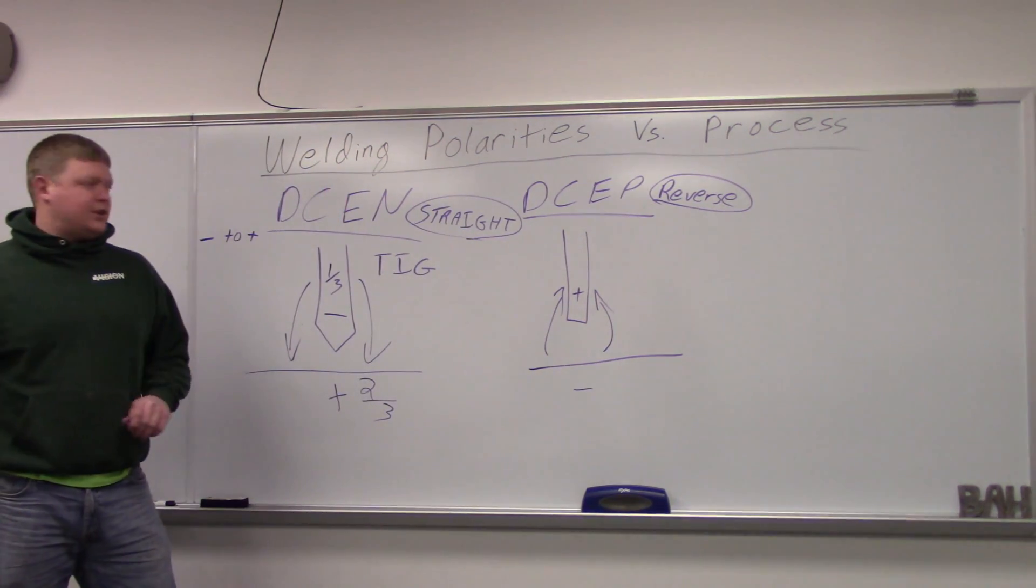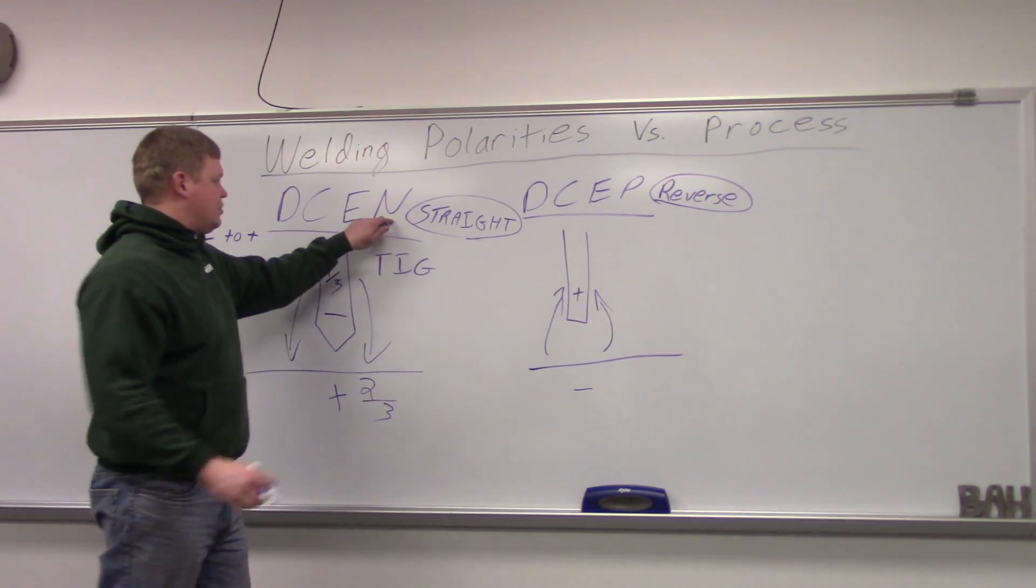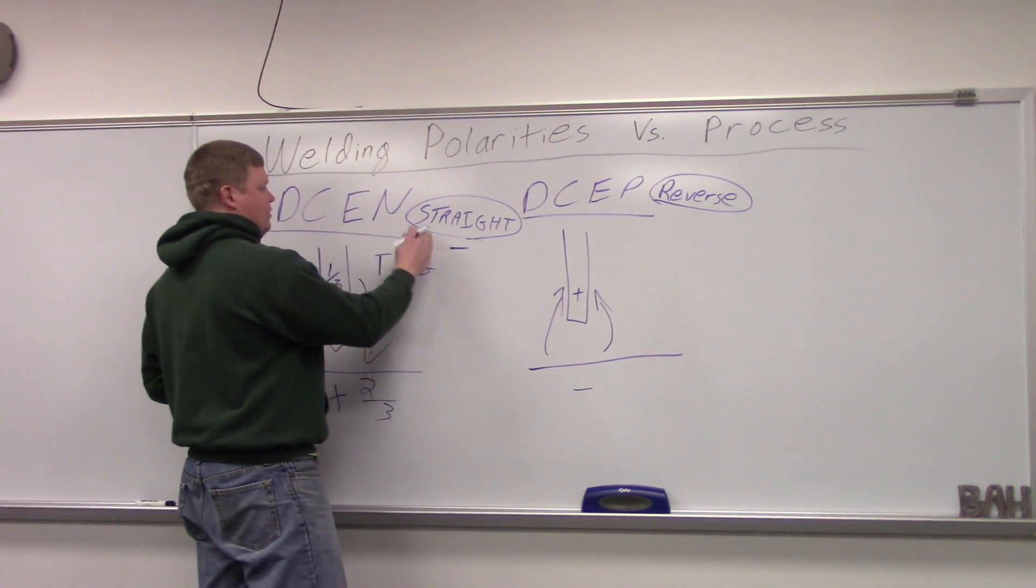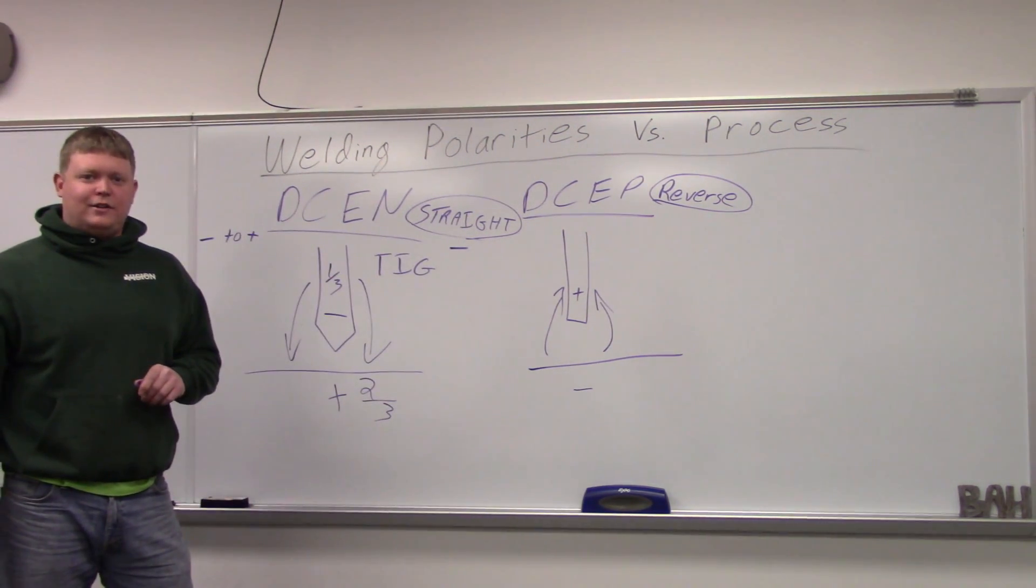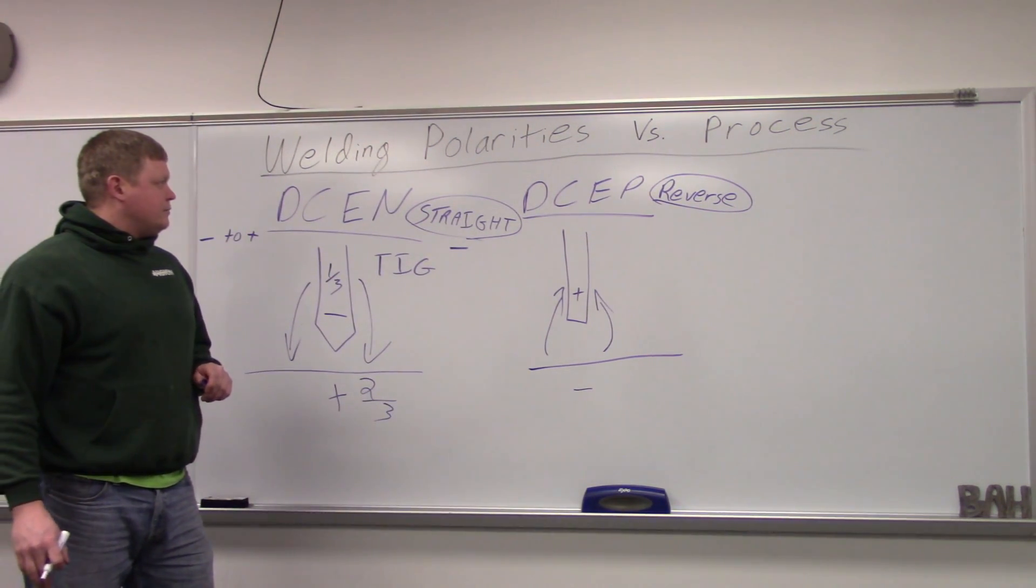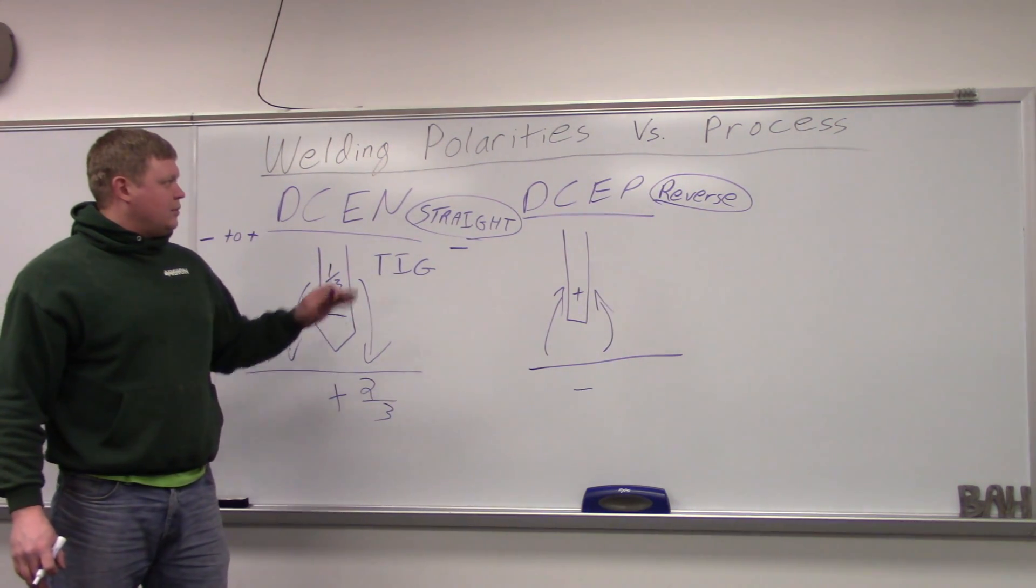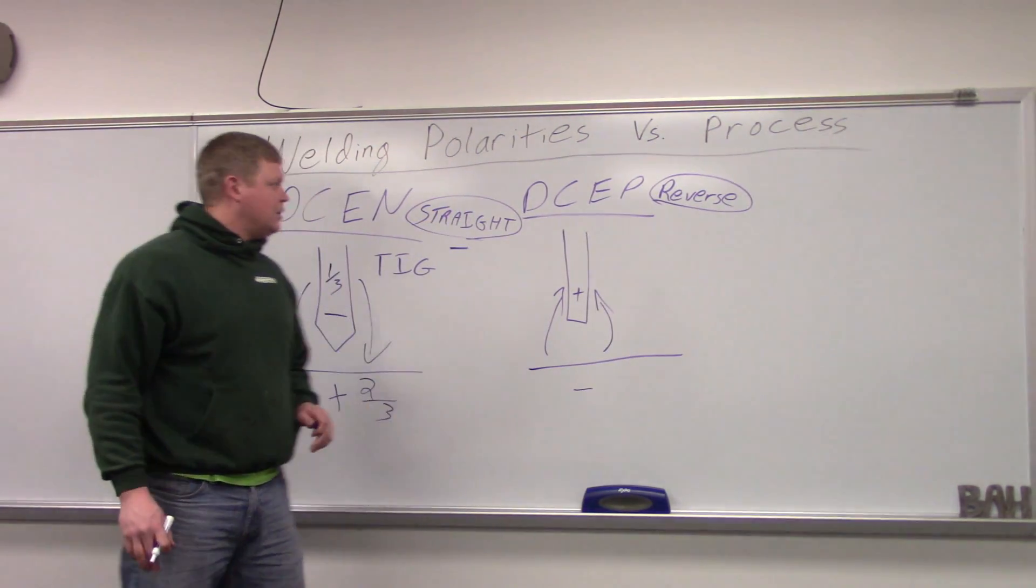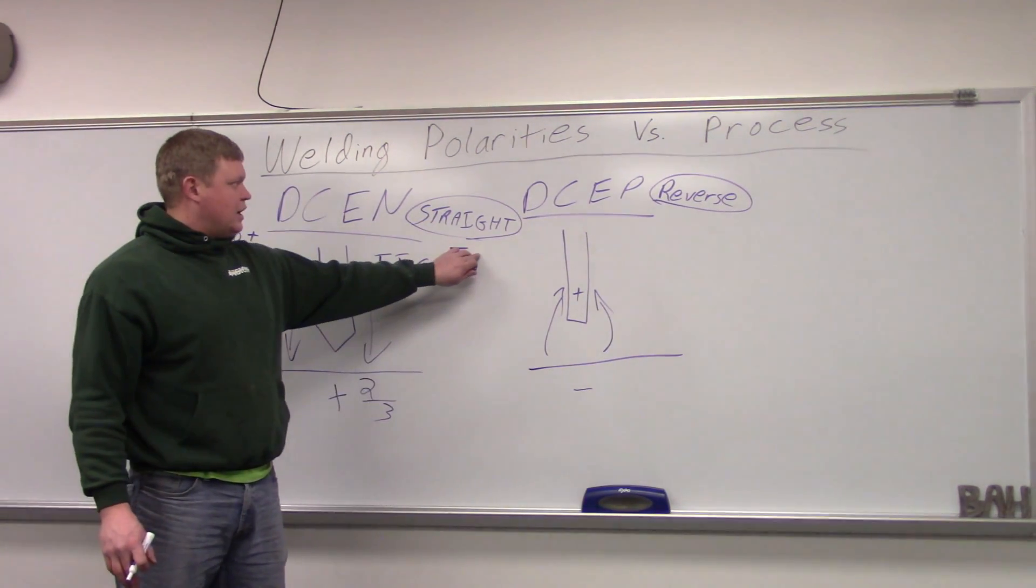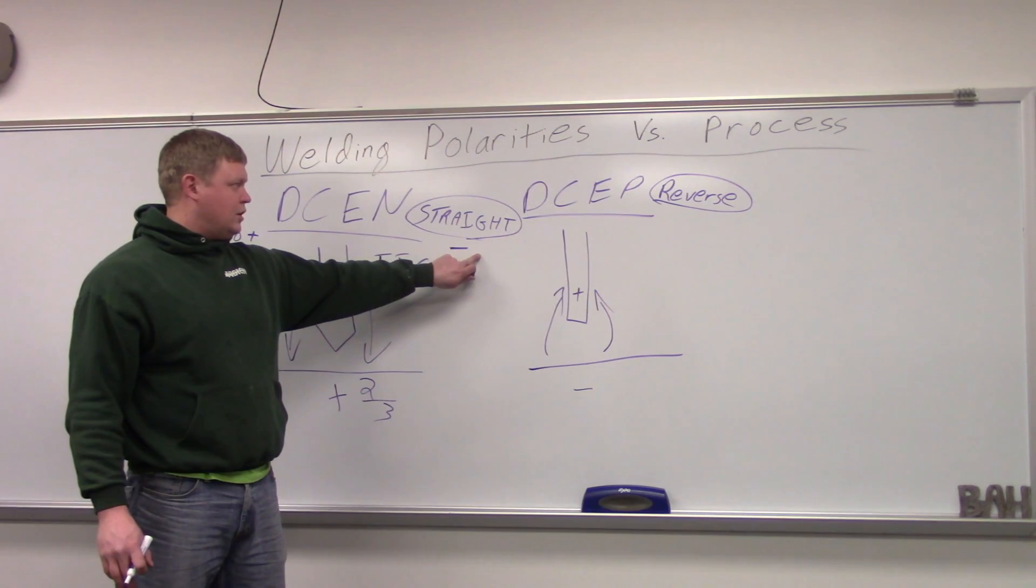And this is called straight polarity. The way I remember this is a negative sign is just a straight line, right? So direct current electrode negative, straight polarity. Direct current electrode positive, reverse polarity. They don't usually refer to it like this anymore. It's usually going to say DCEN or DCEP on the machines. Old machines will still say straight and reverse polarity, though, so you should know what it is.